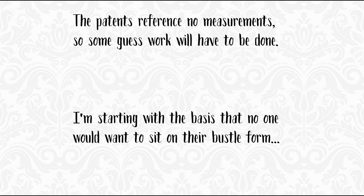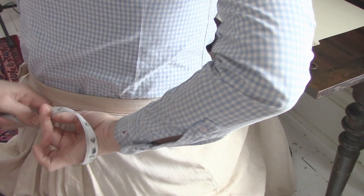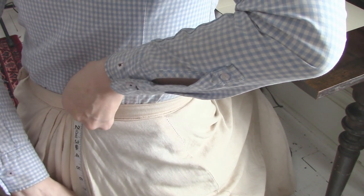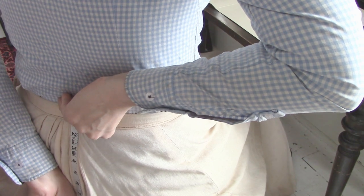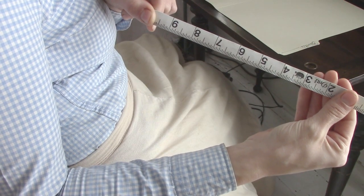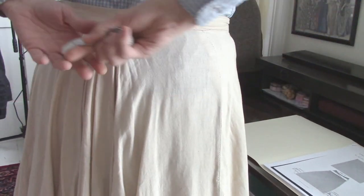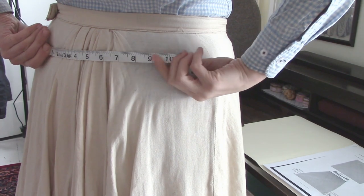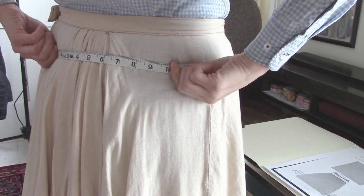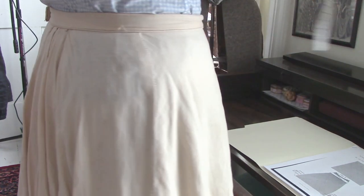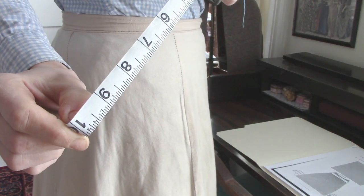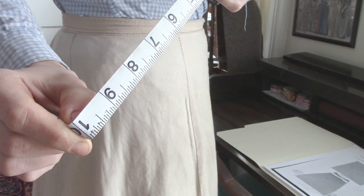The patents reference no measurements, so some guesswork will have to be done. I'm starting with the basis that no one would want to sit on their bustle form, and therefore these should not be any longer than the distance from the waistline to a chair when seated. For me, this means no longer than 9.5 inches. Width-wise, it's a bit more of a wildcard. I have no idea how wide something like this should be. I'm just measuring across my back like this to vaguely correspond with images I've seen, and we'll see where it goes. That's no more than 10 inches wide.